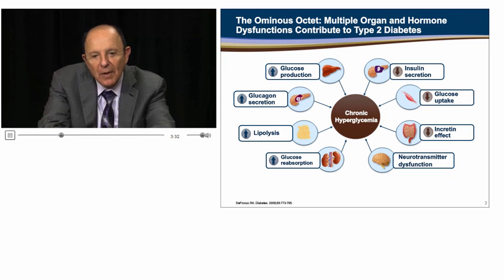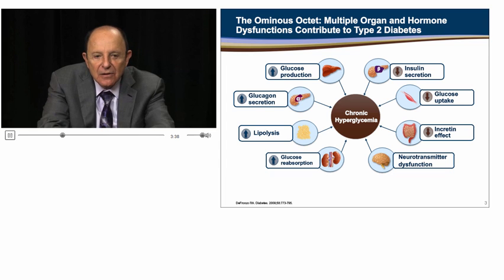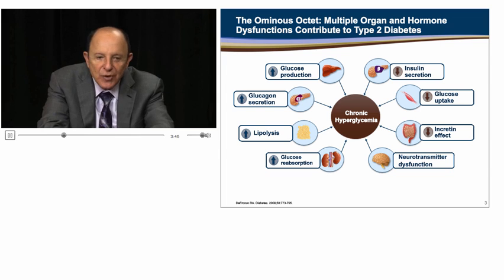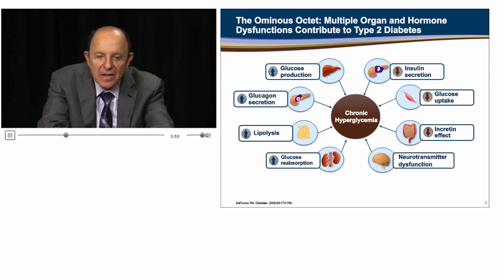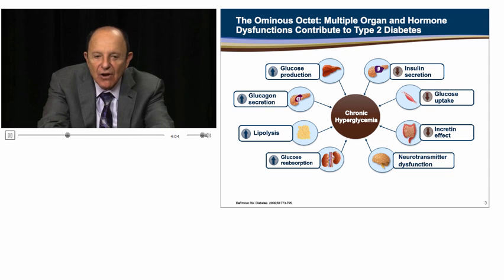At the whole body level, type 2 diabetes is a complex metabolic disease involving multiple organs, including adipose tissue, muscle tissue, the liver, pancreas, gastrointestinal tract, the nervous system, kidneys, and hormones such as insulin, amylin, glucagon, and the incretins. These multiple defects collectively contribute to the pathogenesis of type 2 diabetes, and I have referred to them as the ominous octet.